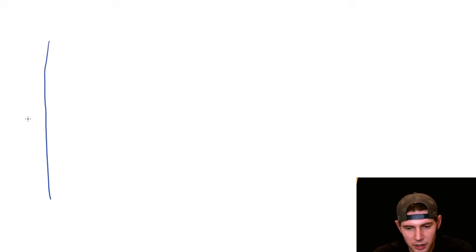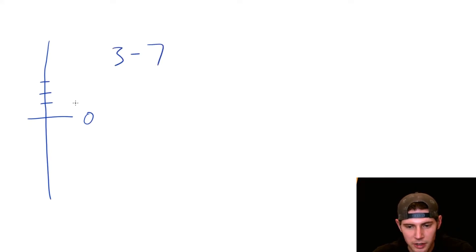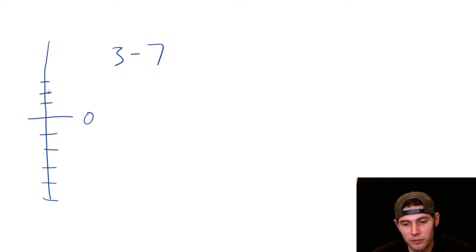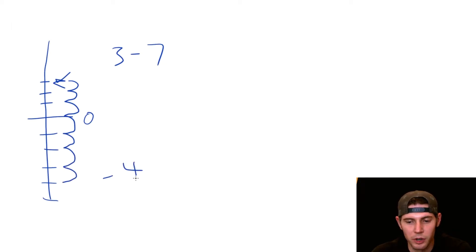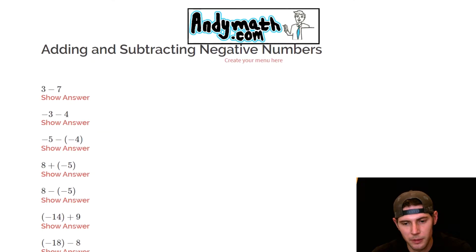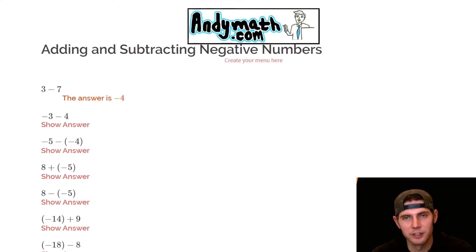We think of a number line. If this is zero, three minus seven means we start at three and then go down seven: one, two, three, four, five, six, seven. That puts us at negative four. So three minus seven is negative four.